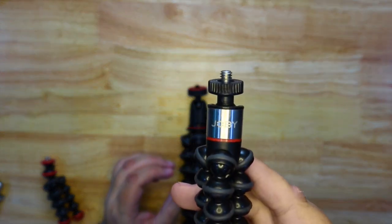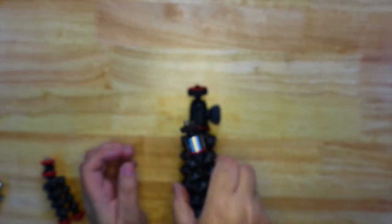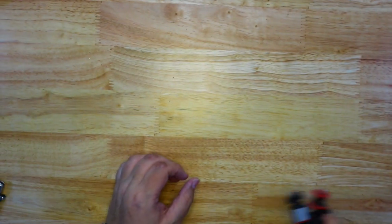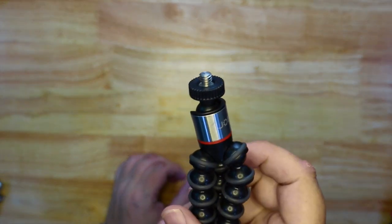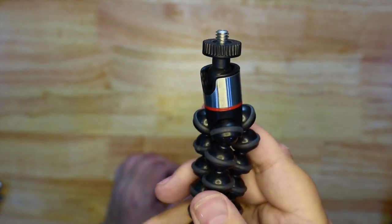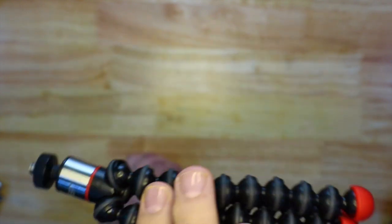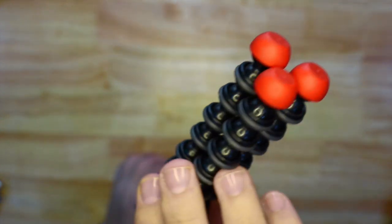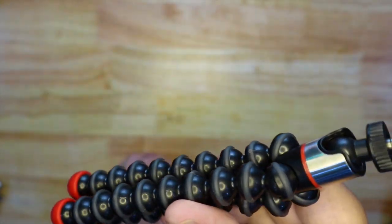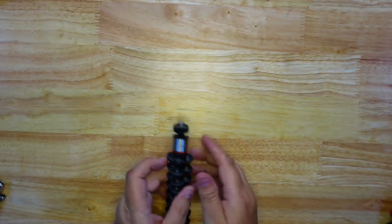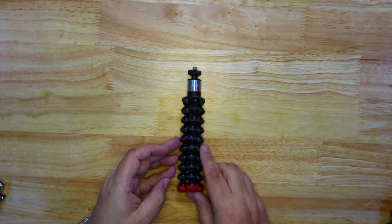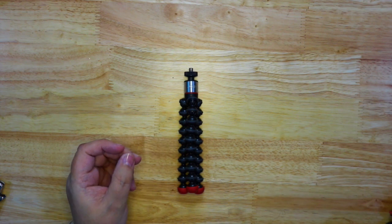Now this one definitely has a plastic ball joint. I got a little bit confused with the 1K. I thought that was plastic but this one's definitely plastic. It does have a metal thread on the top that's probably threaded into that ball joint as well. But the ball joint itself is definitely plastic, made from the same plastic as the legs.